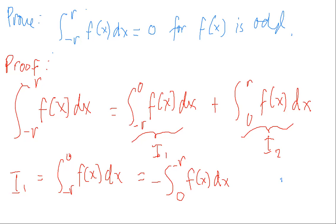If we observe, the upper limit is negative r, so from 0 to negative r. This means all possible values of x here are negative. So we can replace x by negative x, such that we get a positive upper limit of r after integrating.